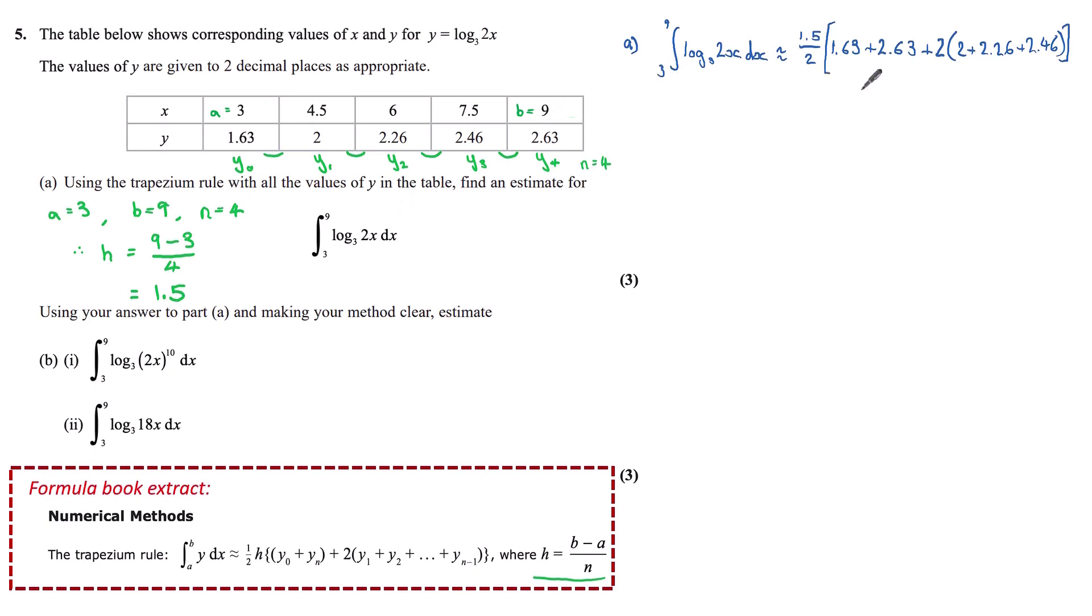So our integral is approximately equal to our h of 1.5 divided by 2, our extreme y values, so our lower value and our upper value, 1.63 plus 2.63, plus 2 lots of our y values in between. Being very careful when putting this into our calculator, we get an answer of 13.275, which is 13.3 to one decimal place.